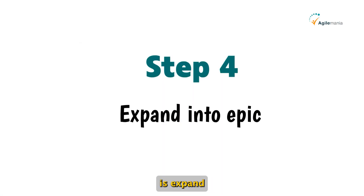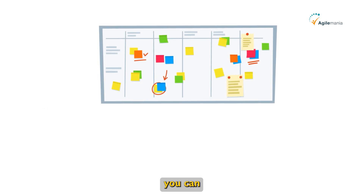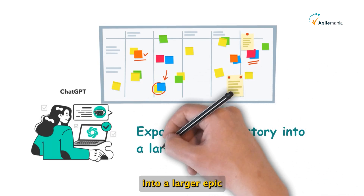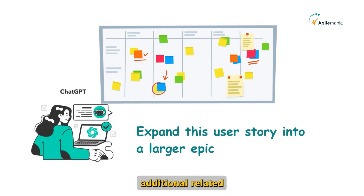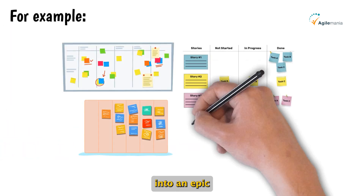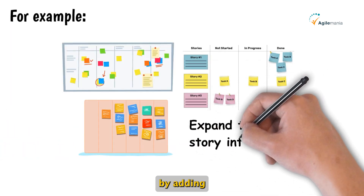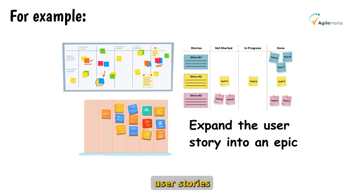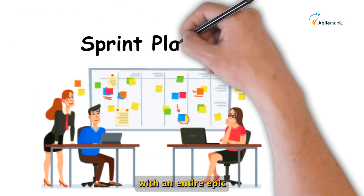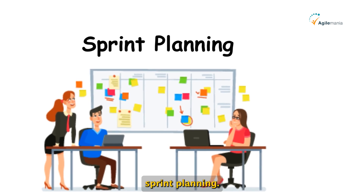The next step is to expand into an epic. Once you have a well-formed user story, you can prompt ChatGPT to expand it into a larger epic by adding additional related user stories. For example: 'Expand the user story into an epic by adding 2-3 additional related user stories that would be part of the same epic.' This provides you with an entire epic to bring to your sprint planning.